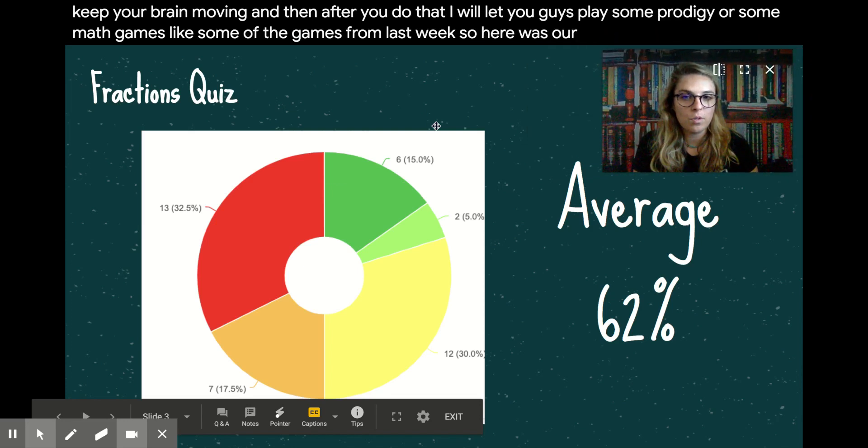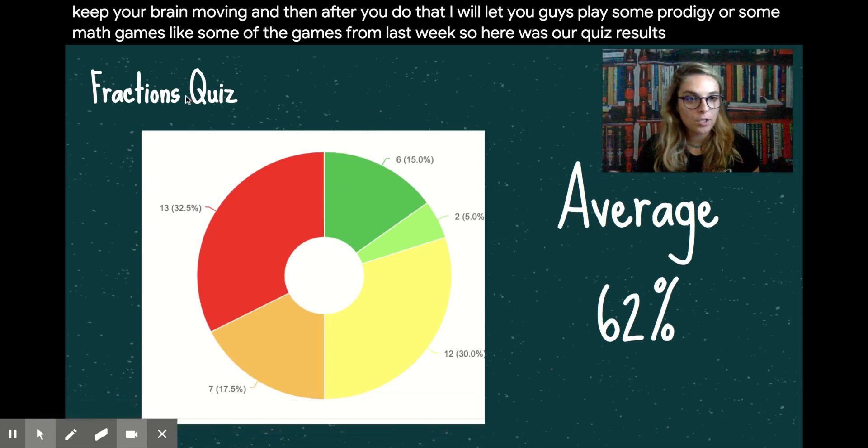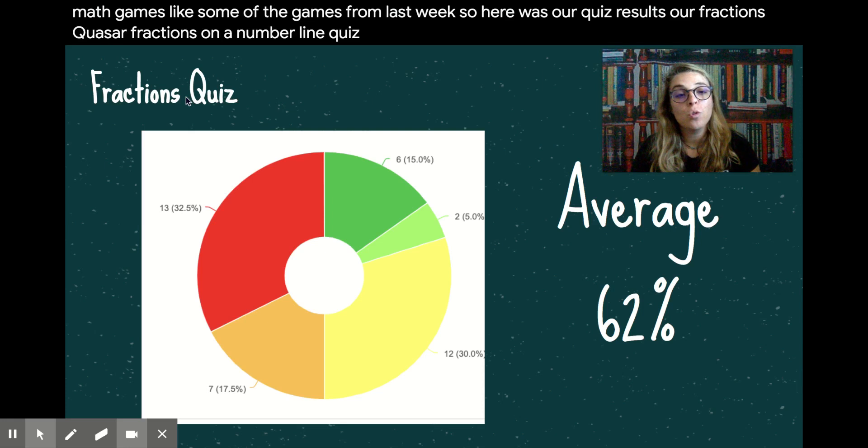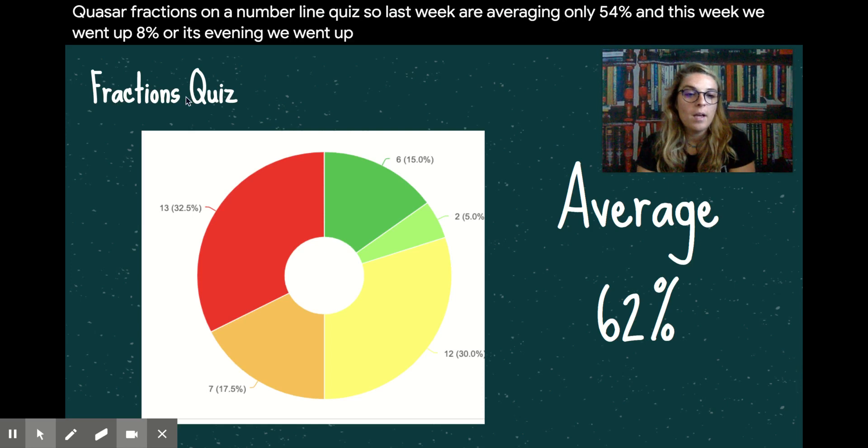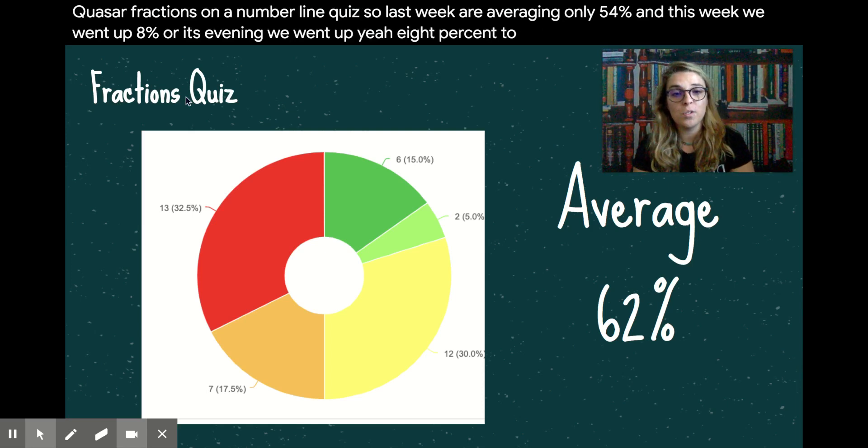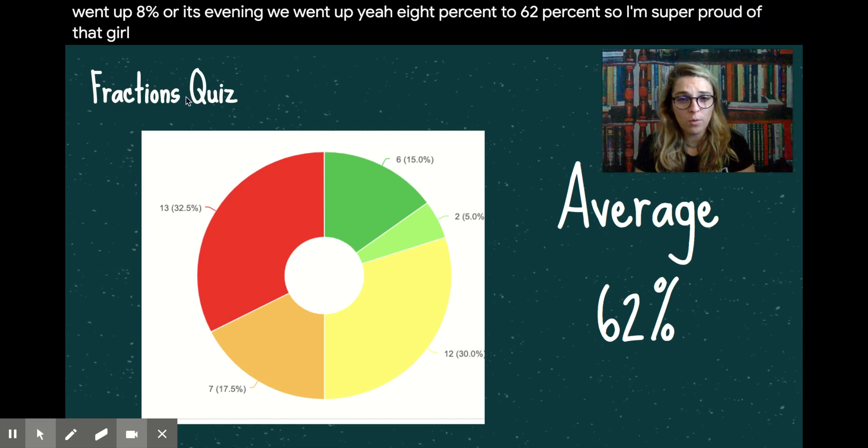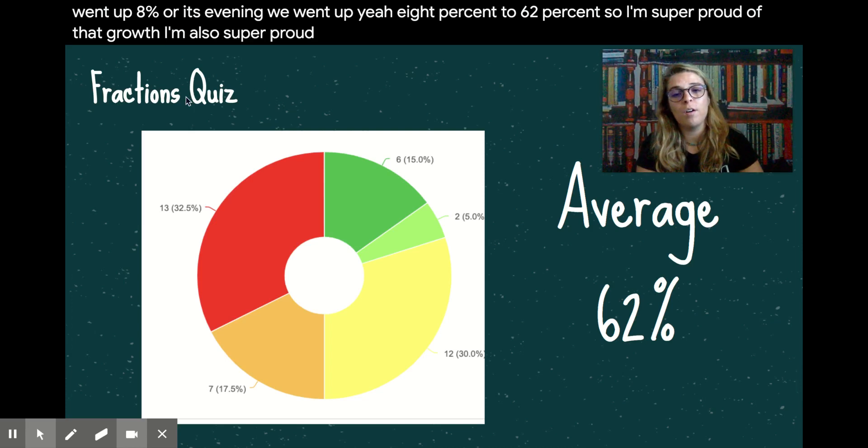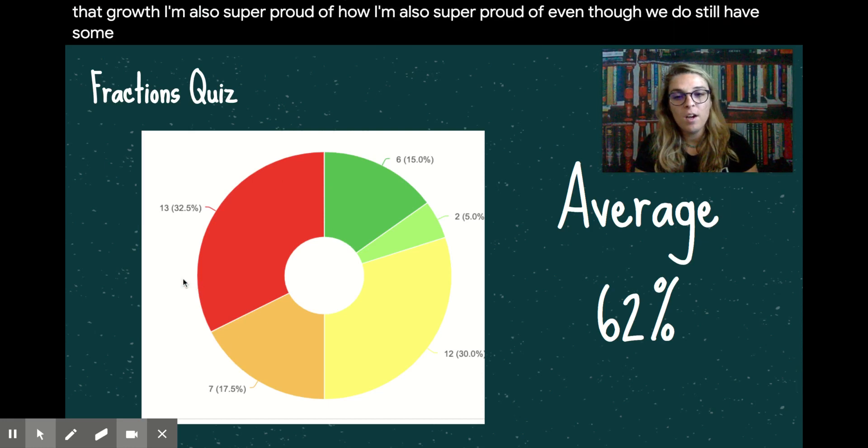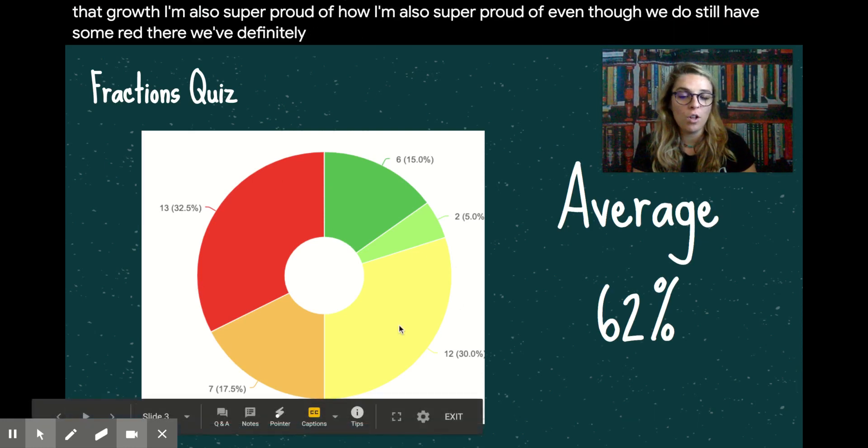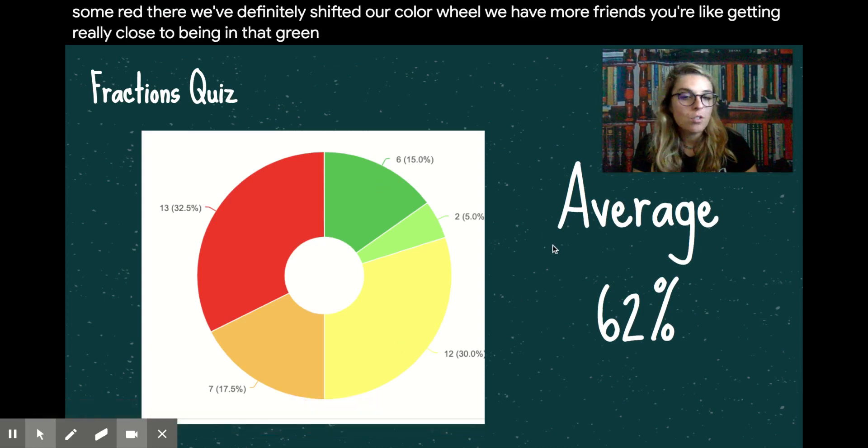So here was our quiz results, our fractions on a number line quiz. Last week, our average was only 54%. And this week we went up 8% to 62%. So I'm super proud of that growth. I'm also super proud of even though we do still have some red there, we've definitely shifted our color wheel. We have more friends who are getting really close to being in that green. So let's look at our wall of fame.